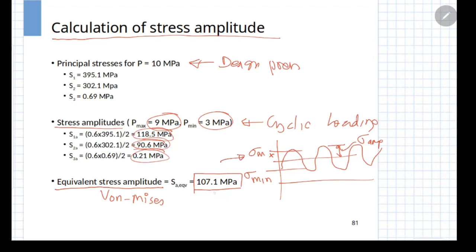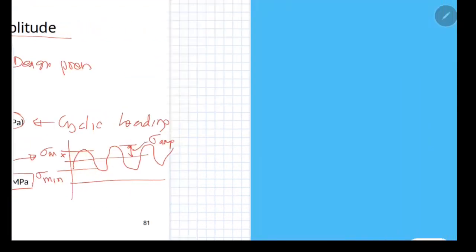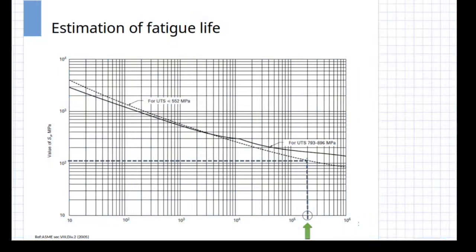We will use this value to enter into the SN curve for the given material. The design code gives you the values of SN curve. The latest design code instead of curve, they give it in terms of table or equation. In this curve, the horizontal axis is the life number of cycles and vertical axis is the stress amplitude. We have calculated the stress amplitude in the previous slide. Using that value, you enter into the curve, which is for your material and from there, you will calculate the value of the life, which in this case is 2 into 10 to the power of 5 cycles.